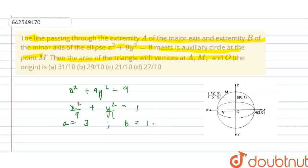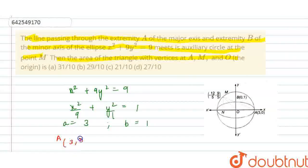The coordinates of point A are (3, 0) and the coordinates of point B are (0, 1). As you can see in the diagram, this is the ellipse, this is B and this is A. So the coordinates of point A are (3, 0) and the coordinates of point B are (0, 1).